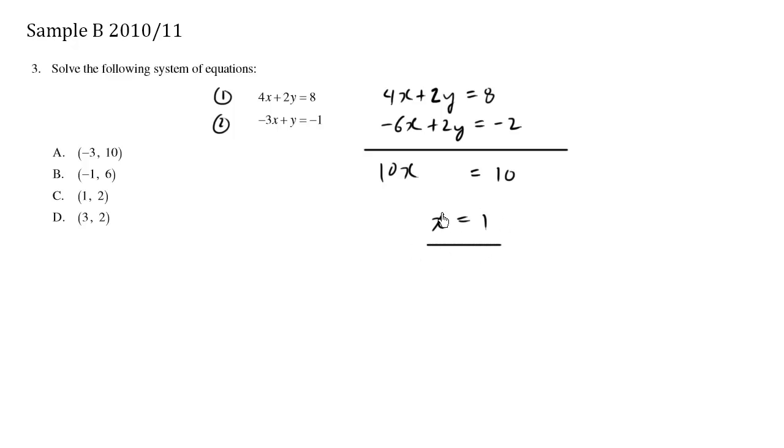So once we know that x equals 1, we simply plug in this x equals 1 into any one of these equations. I'll just use equation number 1. So we recall that 4x plus 2y equals 8. We know that x is 1. So 4 times 1 plus 2y equals 8.